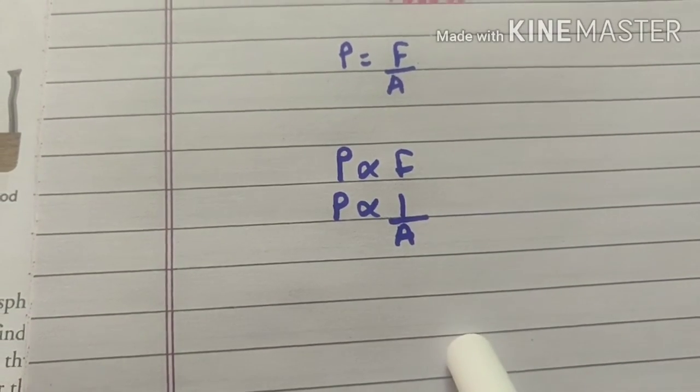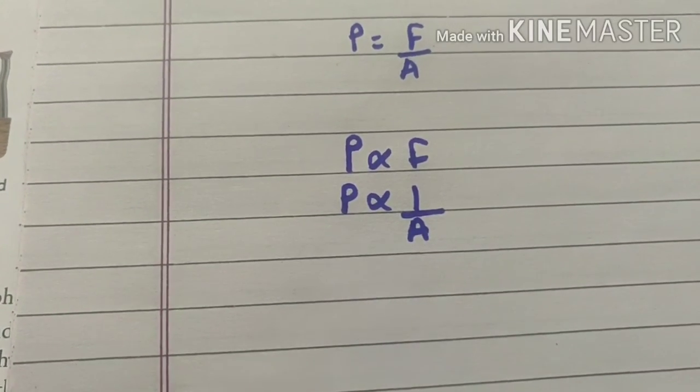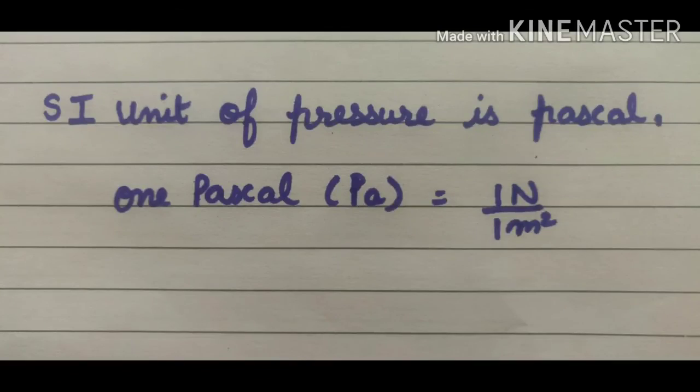For pointed objects, the area is less, so pressure there is more. So the SI unit of pressure is pascal, and it is named after the scientist Blaise Pascal. One pascal is equal to the force of one newton applied over an area of one square meter. That is, 1 pascal equals 1 newton upon 1 meter square.